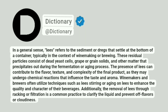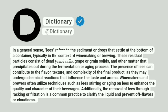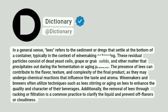Dictionary. Addictionary. In a general sense, lees refers to the sediment or dregs that settle at the bottom of a container, typically in the context of winemaking or brewing. These residual particles consist of dead yeast cells, grape or grain solids, and other matter that precipitates out during the fermentation or aging process.